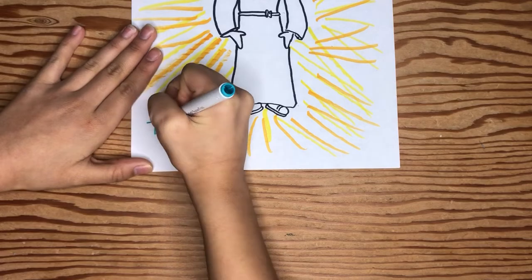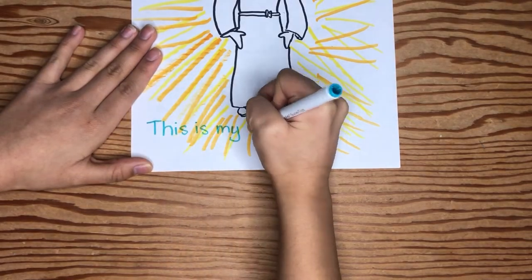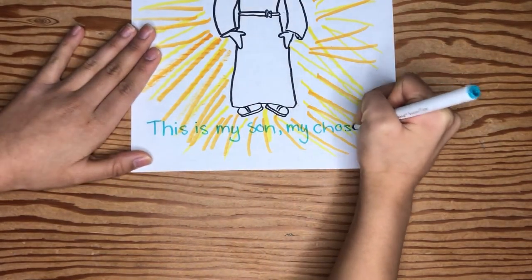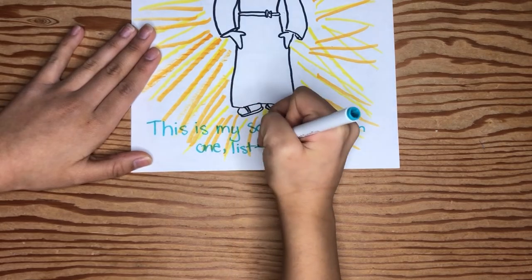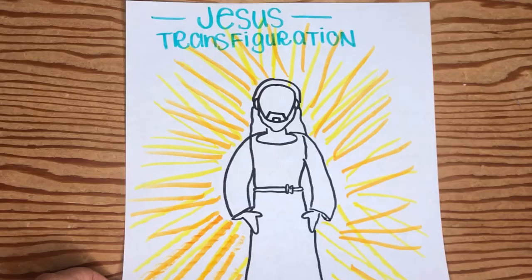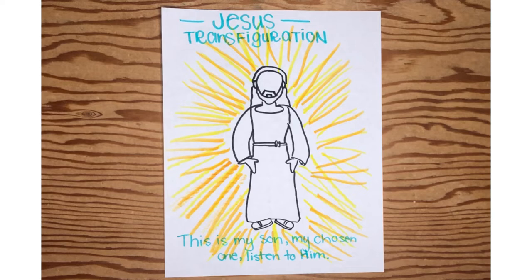Finally, you write down, this is my son, my chosen one. Listen to him. You can also title your craft, Jesus' Transfiguration, at the top. And that's all for today Lighthouse! Bye!